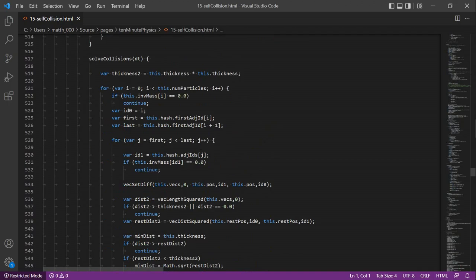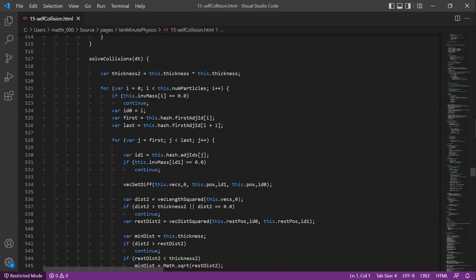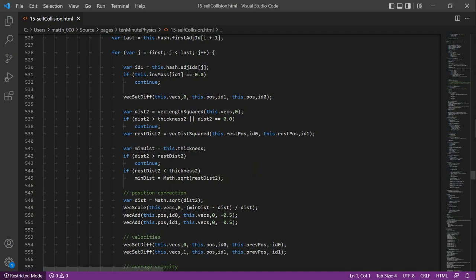In the solve collision method, we run through all the particles. For each particle, we retrieve the neighbor list from the hash. Next, we run through all the neighbors. Here, we compute the distance between the two particles. Then we compute the rest distance. Then we check whether the current distance is smaller than the minimum of the rest distance and the cloth thickness. If this is the case, we push the particles apart.